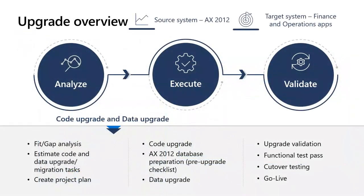In terms of the overall upgrade process, you can think of it as three primary phases: Analyze, where you come up with a project plan to understand budgeting and timelines; Execute, where you conduct the code and data upgrade activities; and Validate, where you test, sign off, and prepare for go-live. I want to take you through each one of these phases and the activities within them.